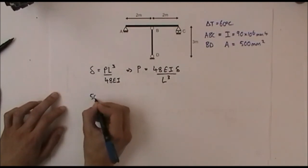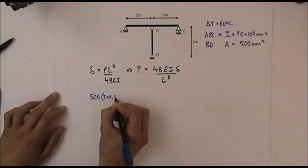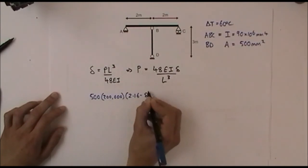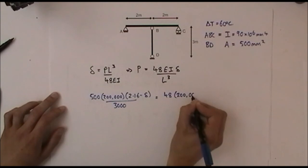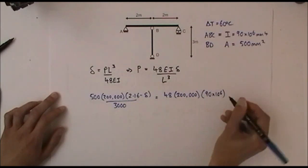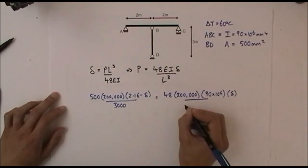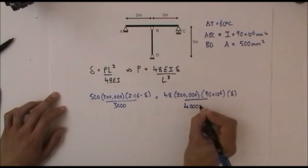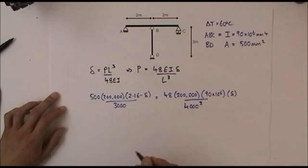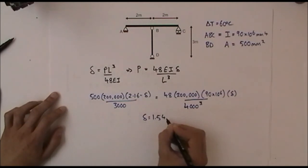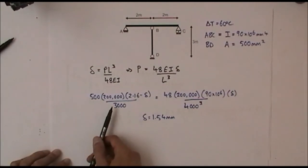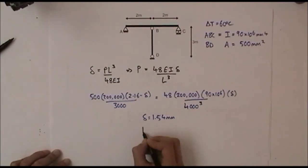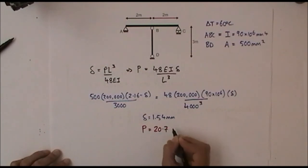Setting the equations equal: 500 times 200,000 times (2.16 minus delta) over 3,000 equals 48 times 200,000 times the I value of the beam times delta divided by 4,000 millimetres cubed. Rearranging that equation we find that delta equals 1.54 millimetres. Substituting the value of delta into either equation, we find that P equals 20.7 kilonewtons.